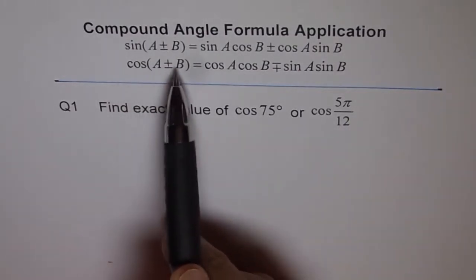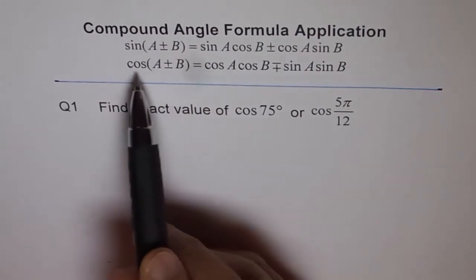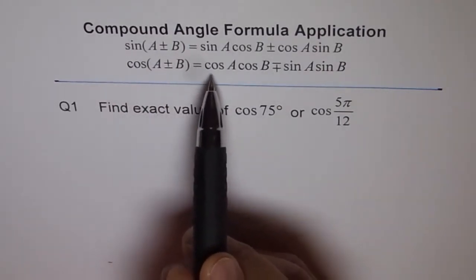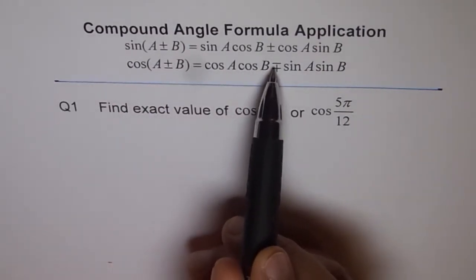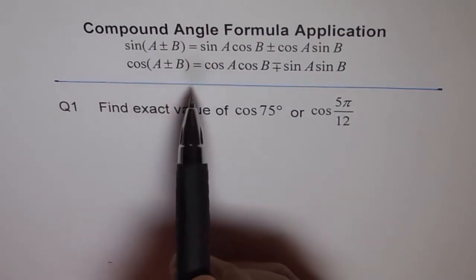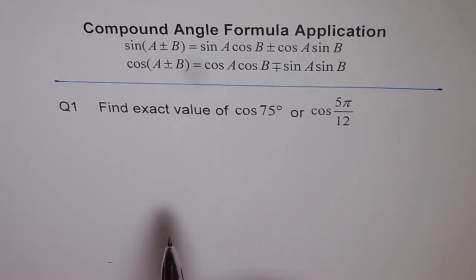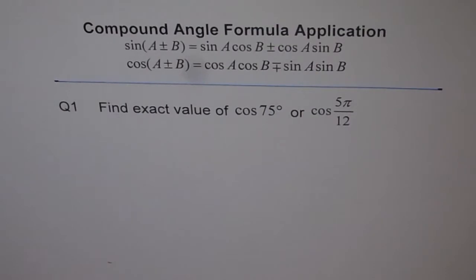Similarly, for cos(A + B), you have to read plus minus, right? So, cos(A + B) is cos A cos B minus sin A sin B. For cos(A - B), it will be cos A cos B plus sin A sin B. So, that is the compound angle formula which we are going to use in these applications, okay?